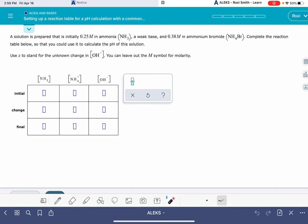In this video, I'm going to show you how to solve the Alex problem called setting up a reaction table for a pH calculation with a common ion. All you're going to be doing in this problem is setting up this reaction table or ICE table. You're not going to actually do any calculations. The problem is going to give you the initial concentrations of the sum of the reactants.